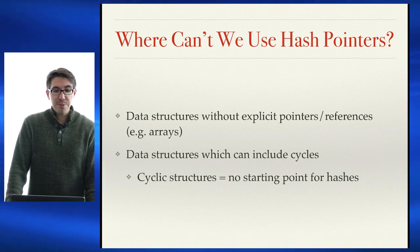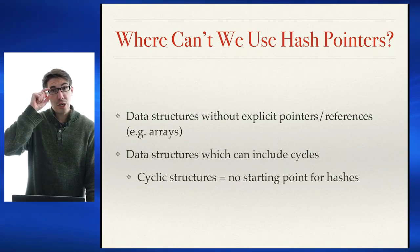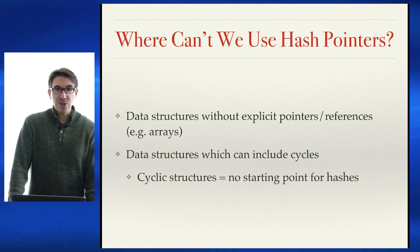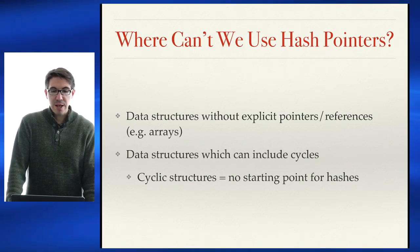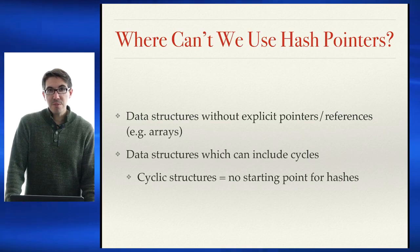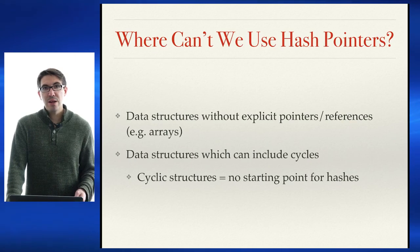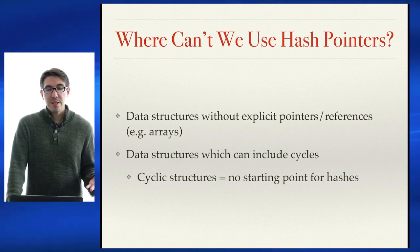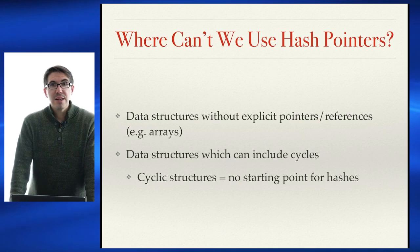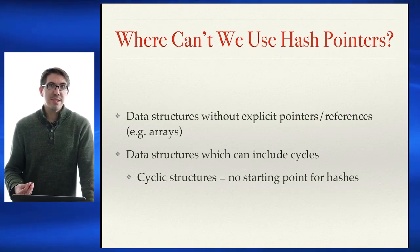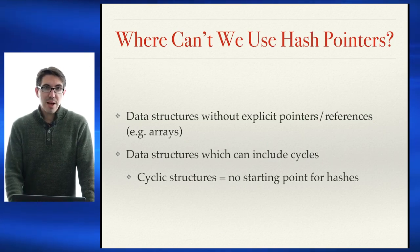You cannot use a hash pointer in any place that a data structure has cycles — data structures must be acyclic. If there is a cycle in the data structure, such as a cyclic graph, there's no starting point for hashes: they all depend upon each other. There needs to be a specific starting point. Trees have a root, linked lists have a head — all of these have some starting point for hashes. If you have a data structure without any starting point, like an undirected graph with cycles, there's no place to have your initial hash, and so hash pointers simply won't work.